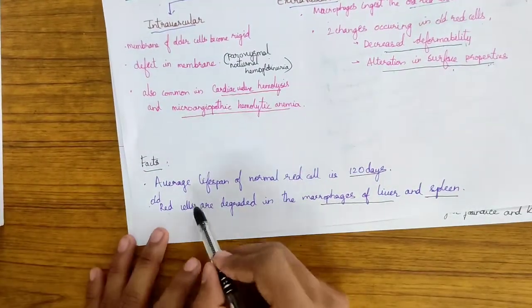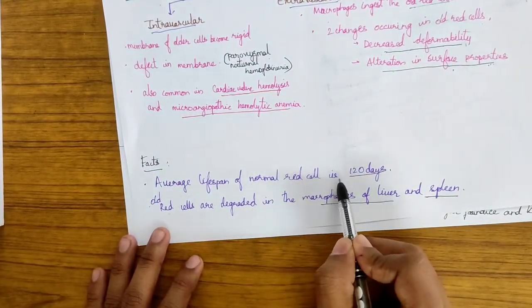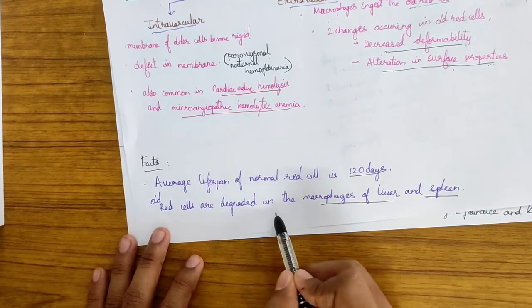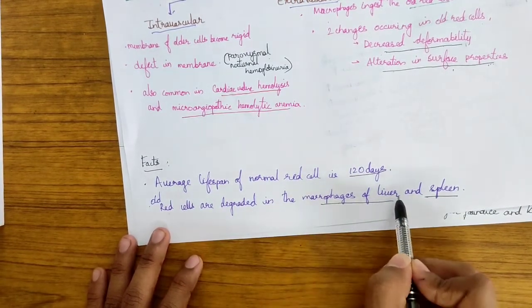Let's talk about some facts. Average lifespan of normal red cells is 120 days. Old red cells are degraded in the macrophages of liver and spleen.